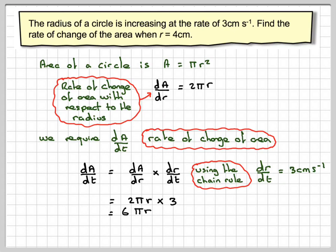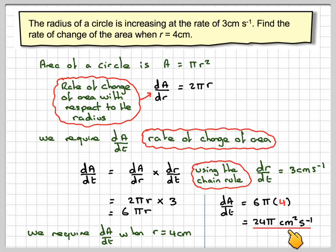Now, if we know the radius is 4, we can say that dA by dt is going to be 6 pi r times 4, that's going to give me the answer of 24 pi centimetres squared per second, and you really should use 24 pi in your final answer.